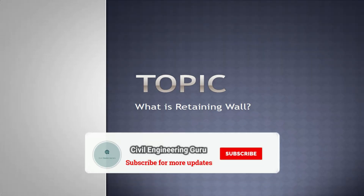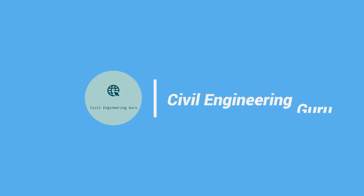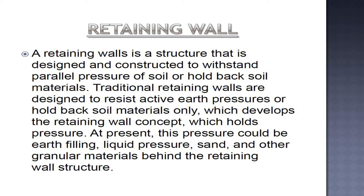Today our topic is: what is a retaining wall, its purpose, applications, and types. A retaining wall is a structure that is designed and constructed to withstand lateral pressure of soil, or hold back soil materials. Traditional retaining walls are designed to resist active earth pressures.